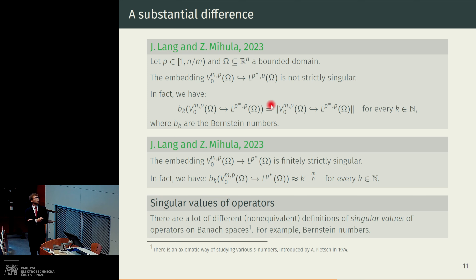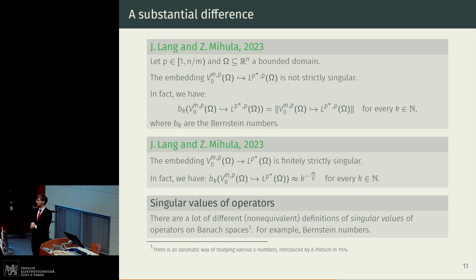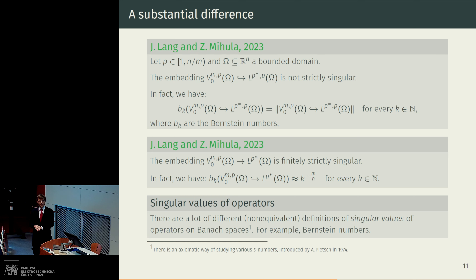Moreover, we were able to show the asymptotic behavior of so-called Bernstein numbers of these embeddings. What are Bernstein numbers? You might know singular values of matrices. Singular values of matrices can be fairly straightforwardly extended to general operators acting between Hilbert spaces. However, in analysis of partial differential equations or calculus of variations, especially with nonlinear problems, we often need to work with general Banach spaces. In the case of general Banach spaces, there is not one unique meaningful way of defining singular values; instead there are several meaningful ways which are in general non-equivalent. Bernstein numbers are one such possibility.